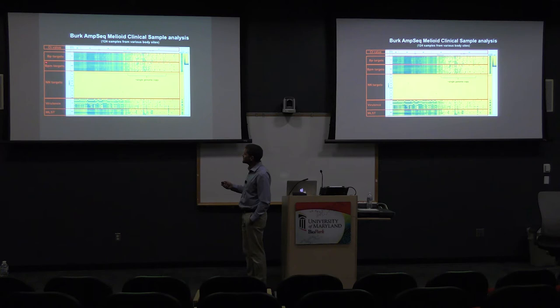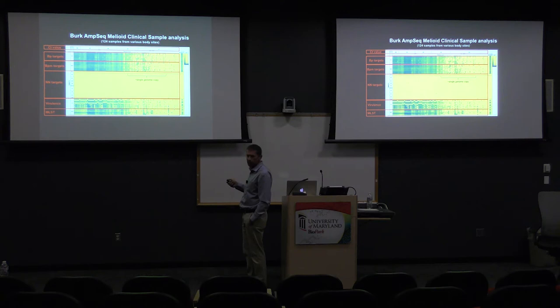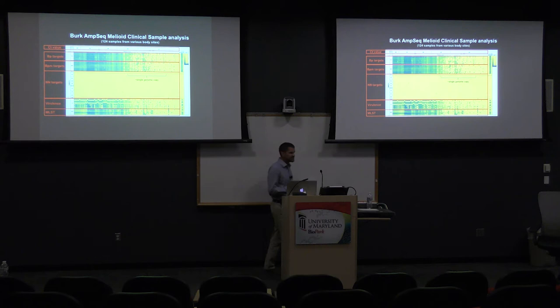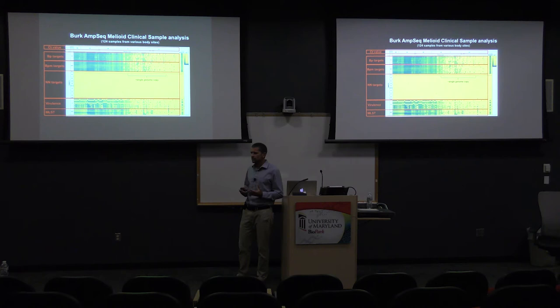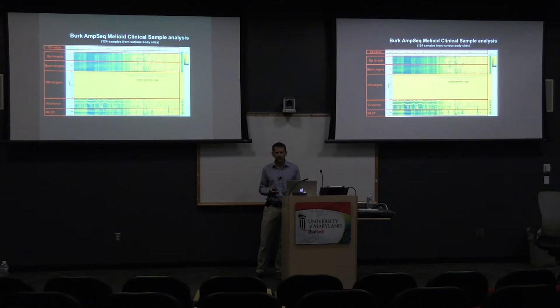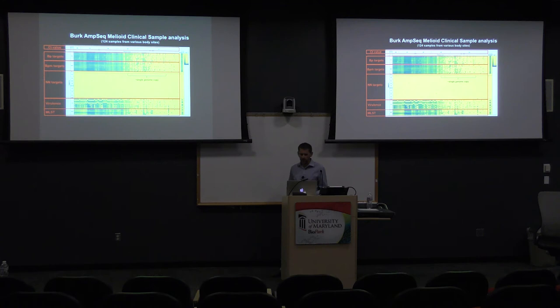Moving to clinical samples: at low CT values we get very robust amplification of pseudomallei and mallei targets with essentially nothing in near-neighbor targets. Even at single genome copy level we see some amplification. You won't see all targets amplify at once due to stochastic reasons, but we have enough redundancy to make confident positive calls that a patient is infected with pseudomallei. Samples were collected from blood, urine, and sputum. Urine turned out to be a particularly good clinical matrix for detecting B. pseudomallei. Even at single genome copy, we felt confident we could detect the pathogen from clinical samples.